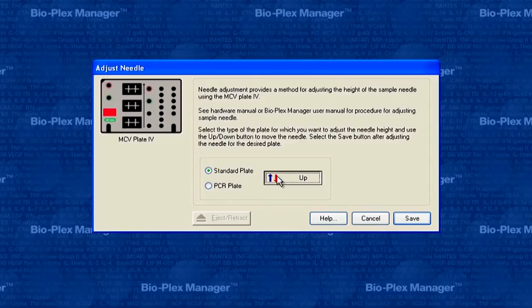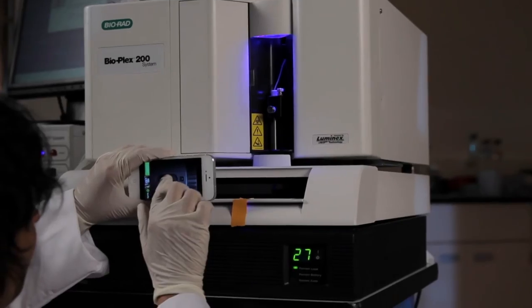Now, click the up-down button in the Adjust Needle dialog box to move the needle up and down.